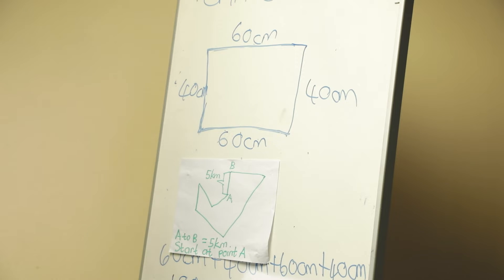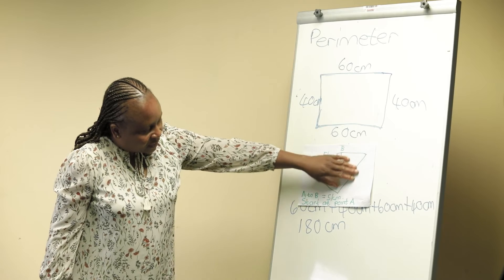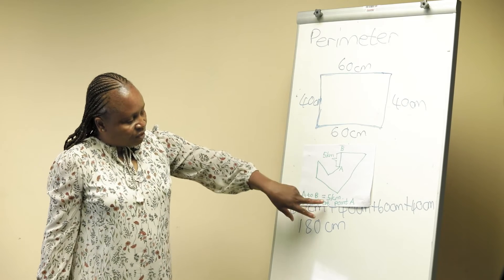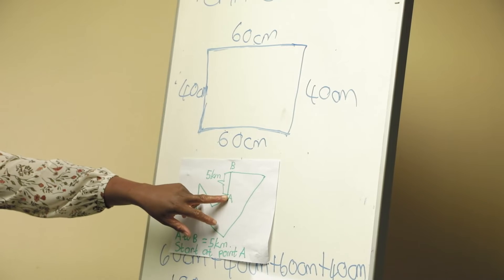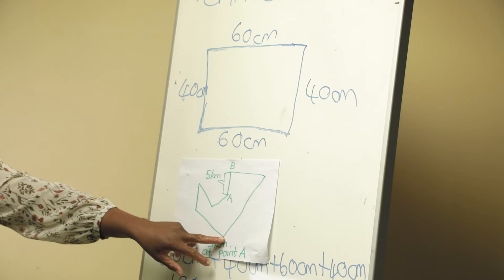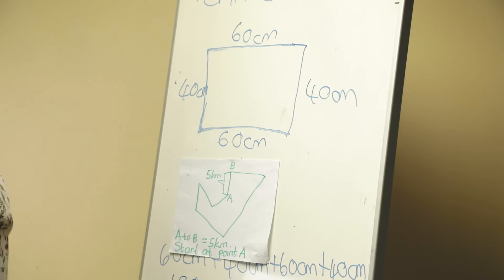You are going to use a ruler to measure. This is in centimeters but you are going to change it to kilometers, but start at point A and measure right round our school garden.